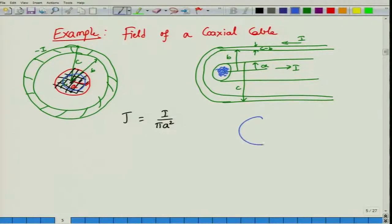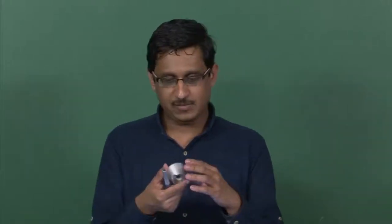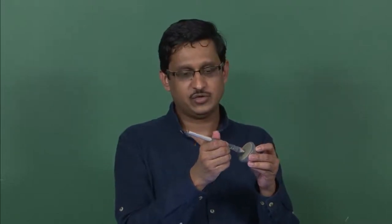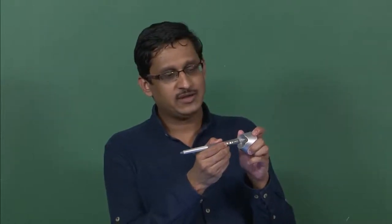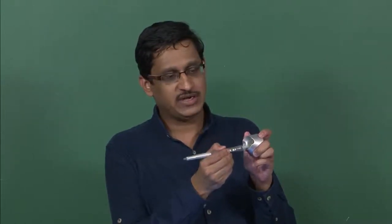What is the amount of current carried by this cross section of radius R within the inner conductor? The entire inner conductor cross section has current density I divided by pi A squared. I am interested only in the current passing through the cross section of radius R.